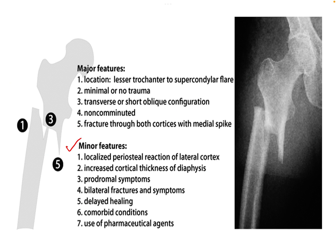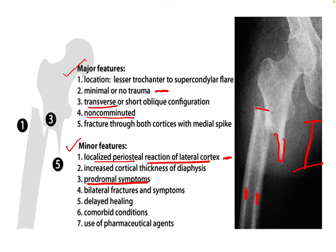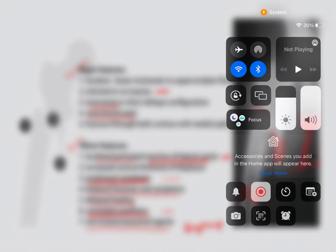In summary, the major features of atypical subtrochanteric fractures are: location in the subtrochanteric region, associated with minimal or no trauma, transverse fracture pattern, medial spike, and non-comminuted nature. Minor features include localized periosteal reaction of the lateral cortex, increased cortical thickness of the diaphysis, prodromal symptoms like dull aching pain, bilateral fractures, delayed healing, comorbid conditions, and use of pharmaceutical agents such as bisphosphonates.